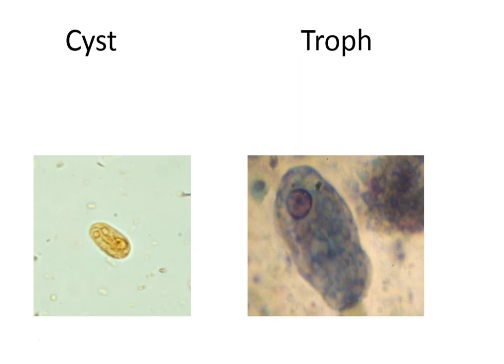The cyst is usually found in formed stool — this is not set in stone — and the troph is usually found in watery stools. When we collect for these, they're put into two vials: one has formalin and one has polyvinyl alcohol. One is for the concentration procedure and one is for the trichrome stain, which is usually the most common one done. The PVA is for the trichrome stain and the formalin is for the concentration procedure.